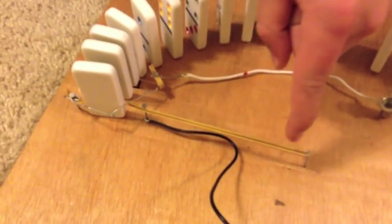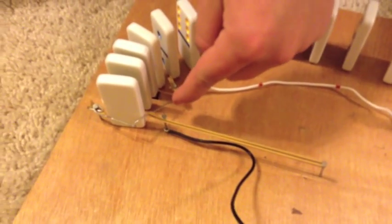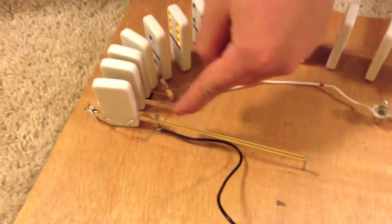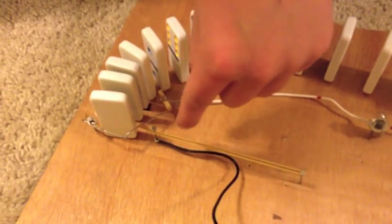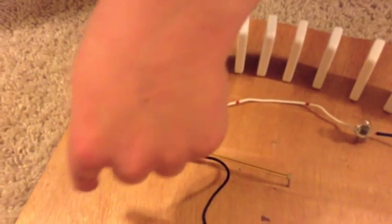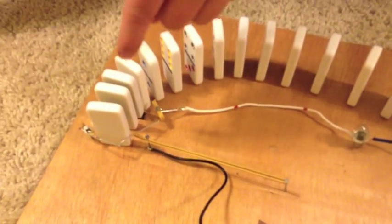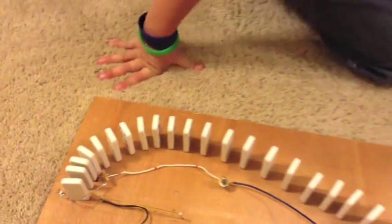Now this rubber band is acting as a spring pulling the paper clip towards the nail, but this catch is pulling it away. So to move the paper clip towards it we have to hit this catch away so the spring can do its job and pull it together. And the dominoes will do that.